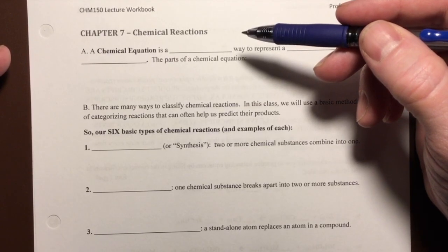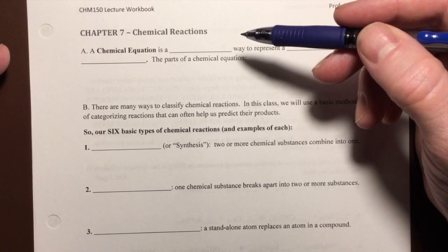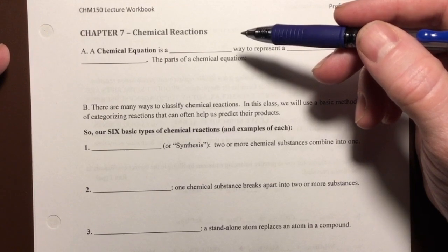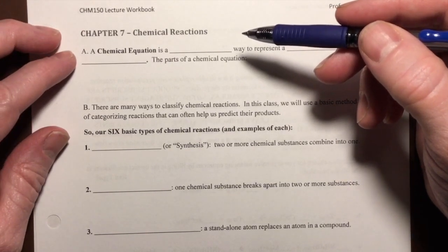A chemical reaction is when one or more chemical substances undergoes a chemical change. We can represent a chemical reaction with a chemical equation.